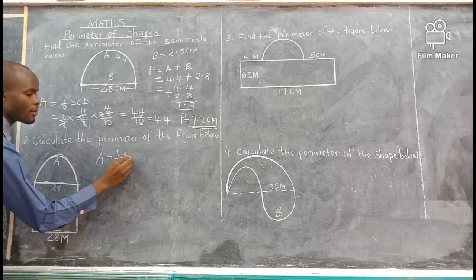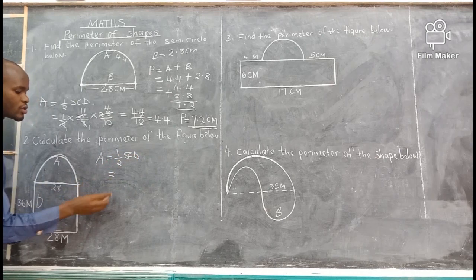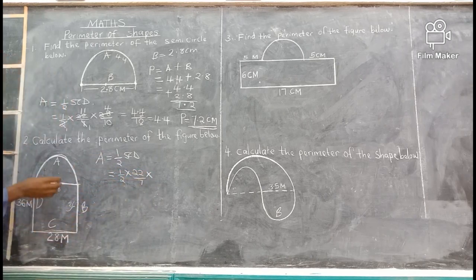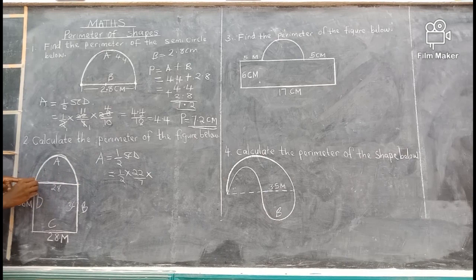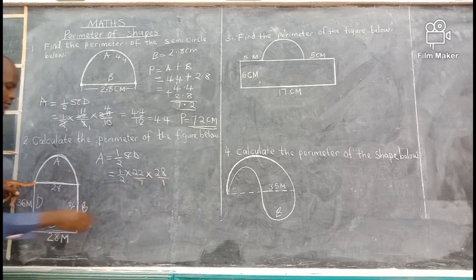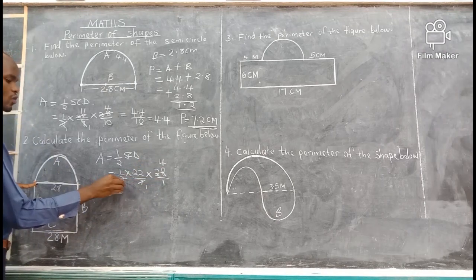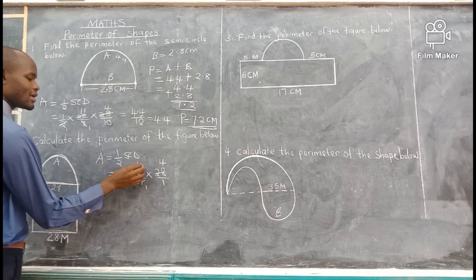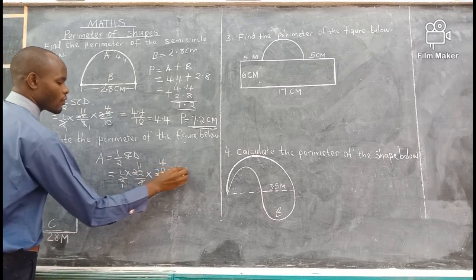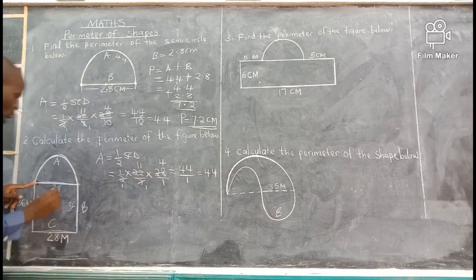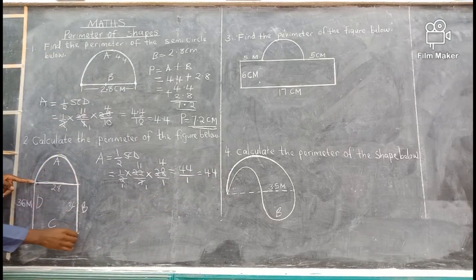A is the arc of a semicircle, so you get it using half pi times diameter. Substitute: half times 22 over 7 times the diameter. The diameter of this semicircle is 28 — the line joining the two ends. Write 28 over 1. Dividing: 28 divided by 7 gives 4; 22 divided by 2 gives 11. So 11 times 4 gives 44, over 1, giving 44. That was the only missing line.